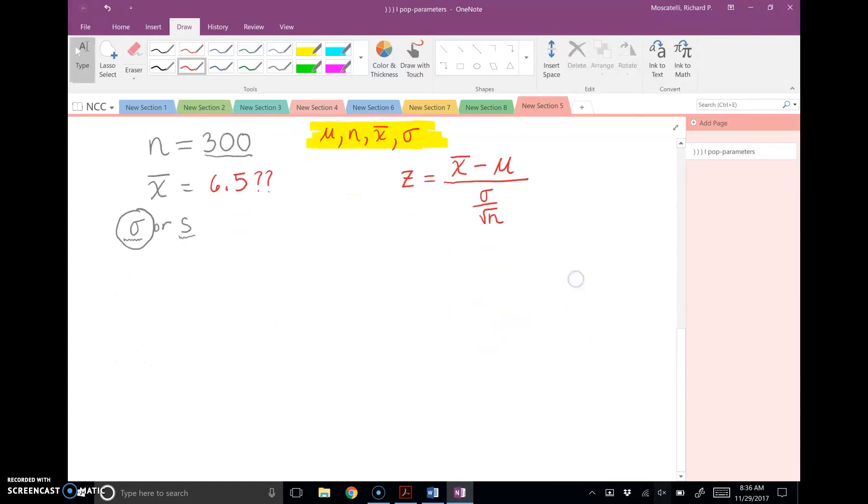Now, think about this. The central limit theorem tells me that this z-score, now on the bell curve, here's zero in the middle, standard deviation of one, so here's the standard normal distribution.